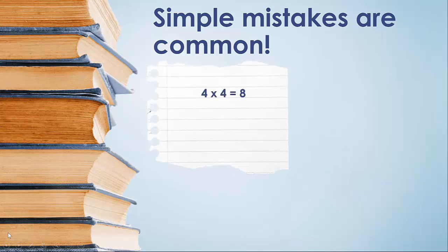For example, I often see students take 4 times 4 and get 8, and that's wrong. I often see students take 3, square it, and get 6. That's completely wrong. I often see students take the square root of 9 and get 81. That is simply wrong.